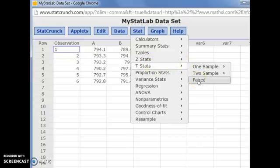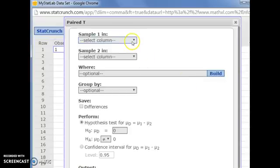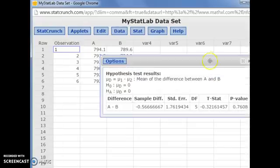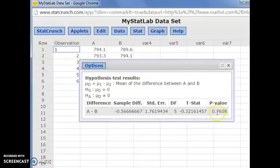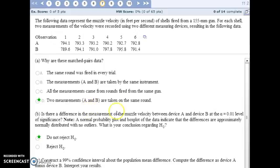and this is paired data. So make sure you pick paired between instrument A is sample one. The measurements in column B are sample two. And with a hypothesis, our null is that there's no difference between the two instruments. Our alternative is that there is a difference. So hit compute at the bottom, and you get a p-value of 0.76. That is not less than 0.01, so we will not reject the null hypothesis.